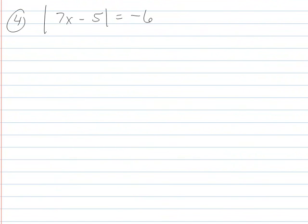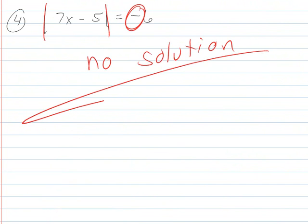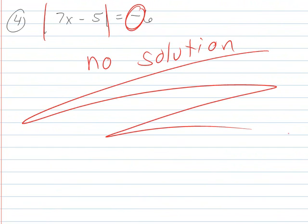This one, hopefully you look at it and immediately say, an absolute value can't be equal to a negative. There's no solution. Don't get those problems wrong because they're like two and a half second problems, and it takes way longer to find the wrong answer than it does to find the right one.